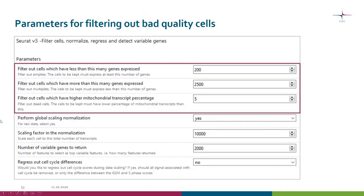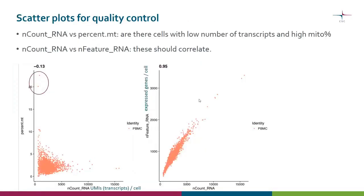So what we want to filter out in the next stage are the empties, the multiplets, and the dead cells. This filtering tool does many other things as well, but the three key parameters are: the minimum number of expressed genes a cell must have to be kept (to remove empties), the maximum number of expressed genes allowed (to remove multiplets), and the maximum percentage of mitochondrial transcripts, with a default value of 5%.